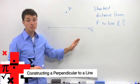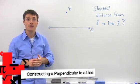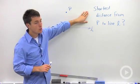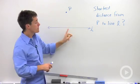If I showed you a line L and a point P that was not on that line, what's going to be the shortest distance from P to L?